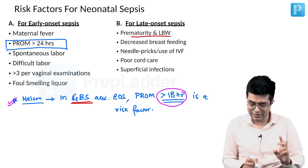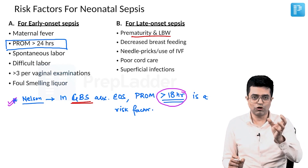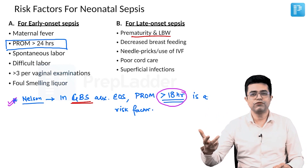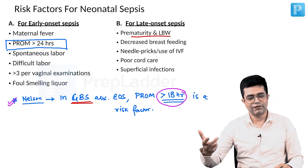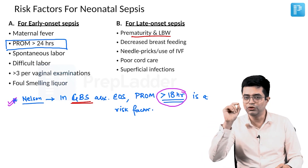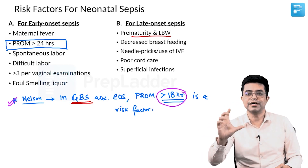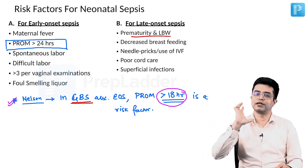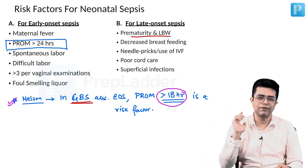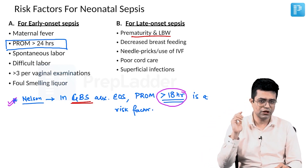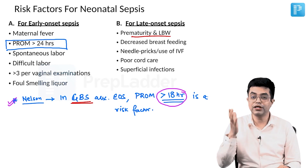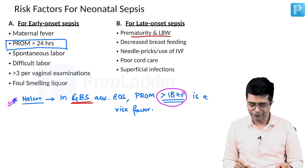This is an important clue. Nelson clearly states the summary: take PROM more than 24 hours as a risk factor in any case, but for Group B Streptococcus infection, take more than 18 hours as the risk factor. This is a small but notable change, mentioned in standard Western textbooks of neonatology, including Nelson.